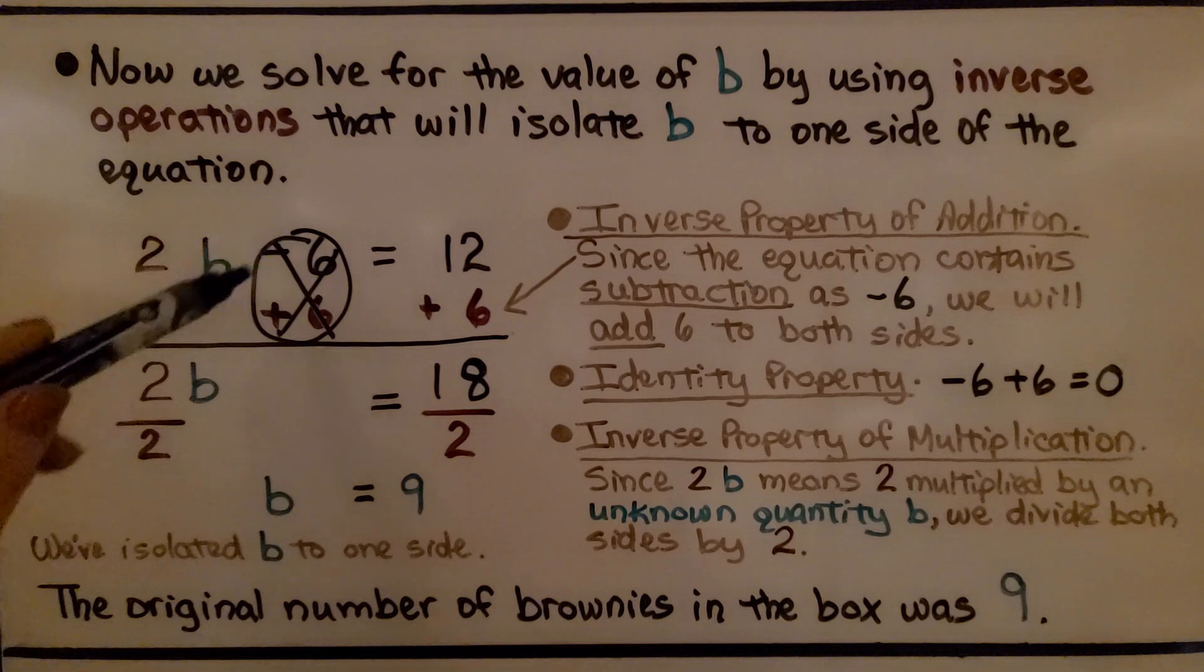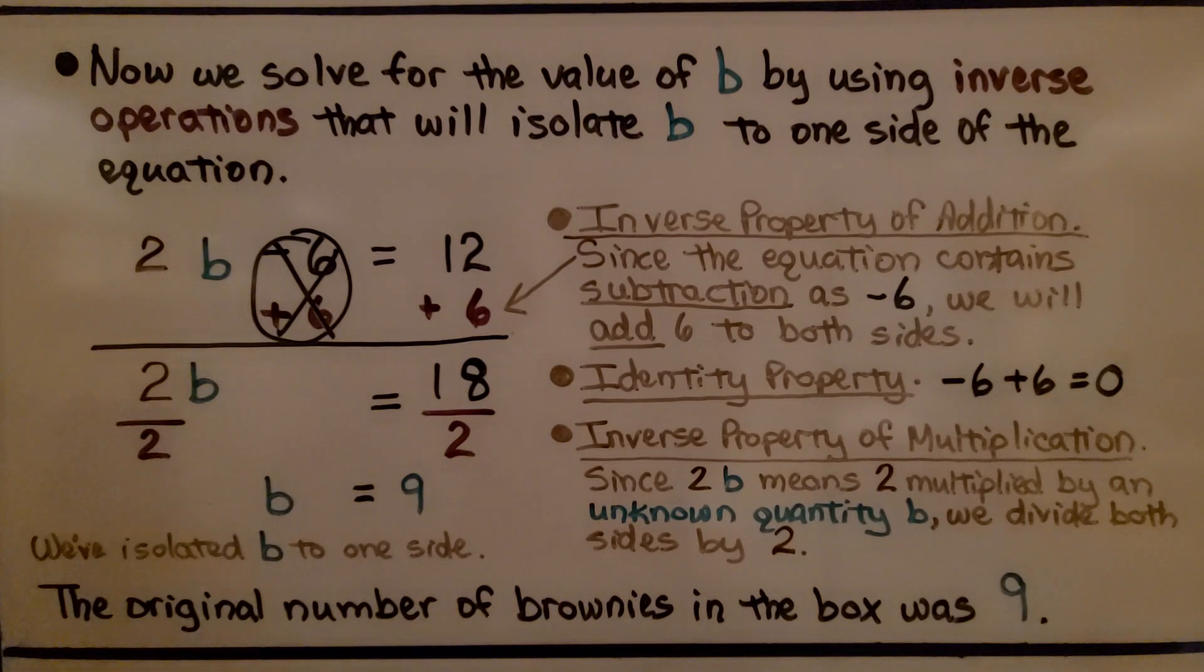The inverse property of multiplication is used because 2b means 2 multiplied by an unknown quantity b. We divide both sides. The inverse of multiplication is division. So we divide both sides by this coefficient 2 and we get 2 over 2, which is 1. We have 1b equals 9 because 18 divided by 2 equals 9. We've isolated b to one side of the equation. We know the original number of brownies in the box was 9.